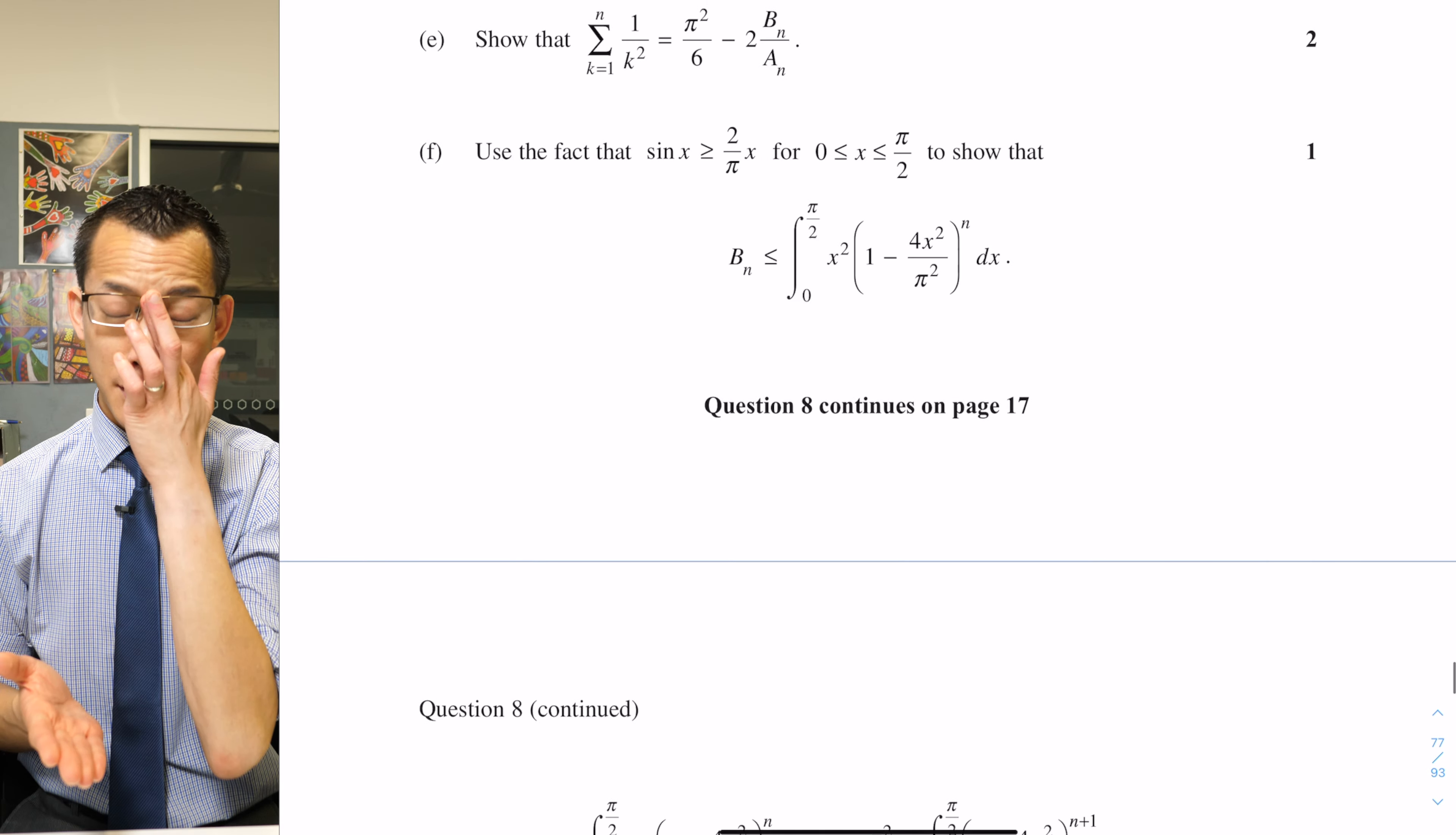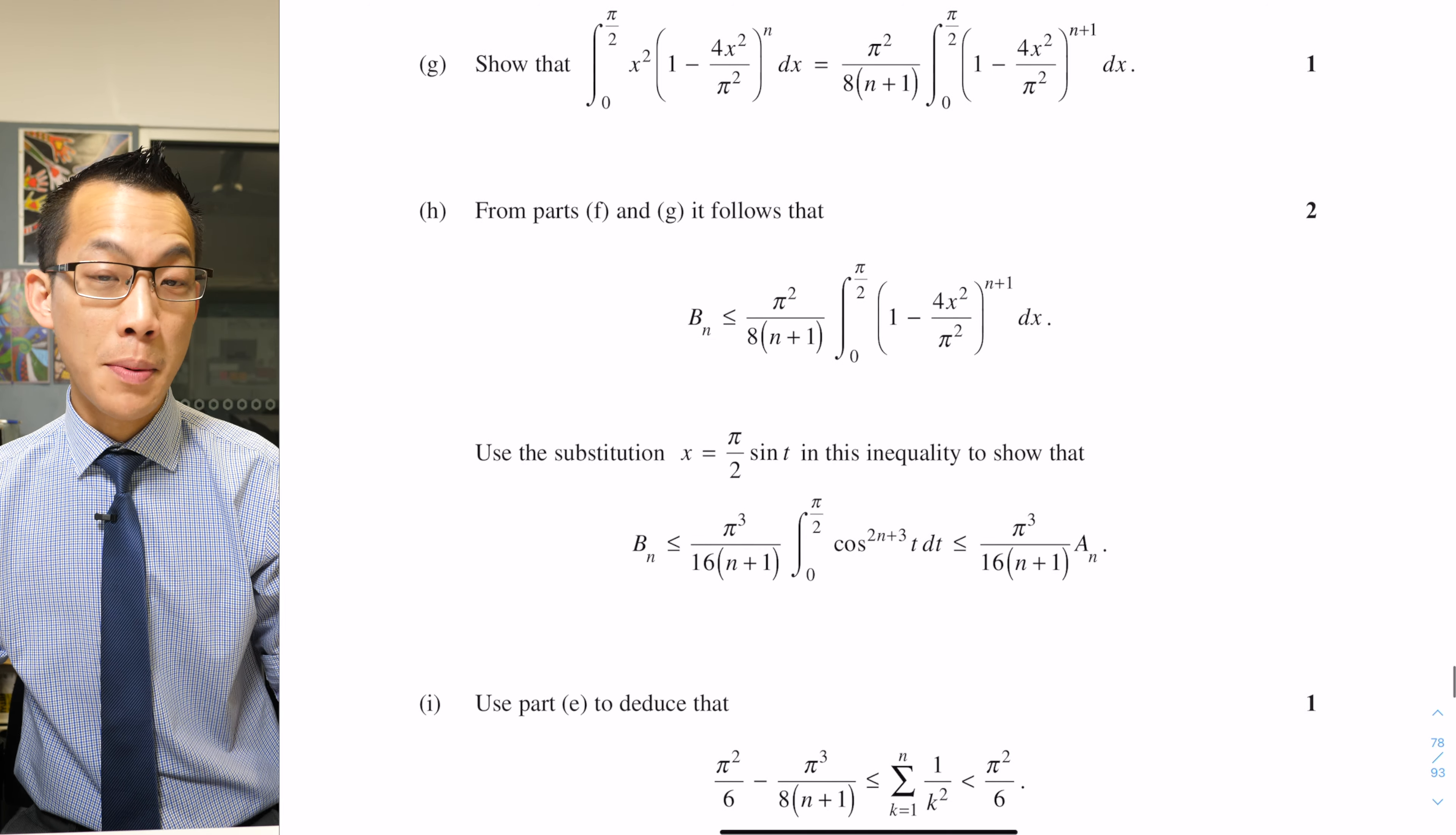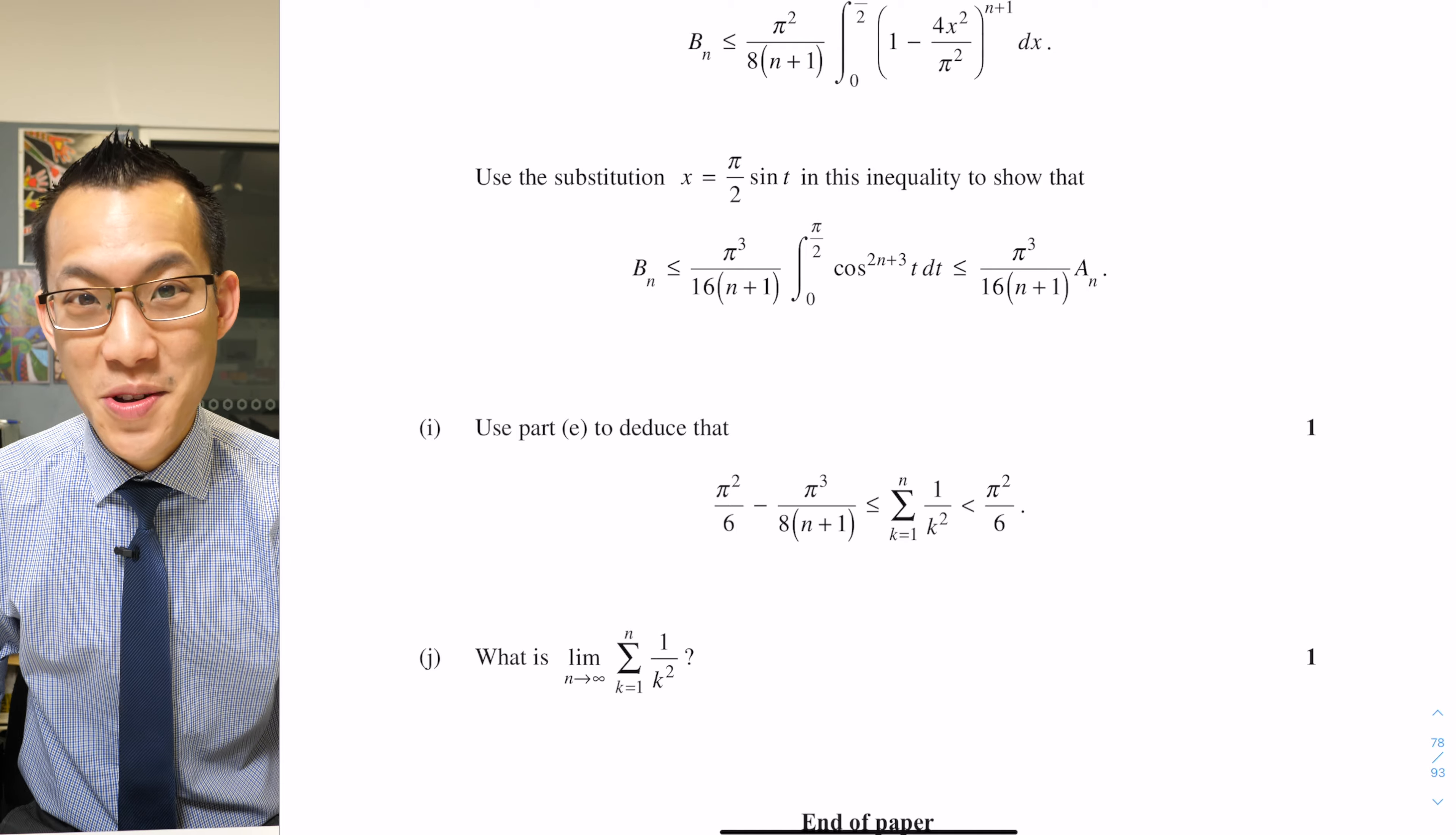You can see questions will often say 'hence or otherwise' or 'use part this or that.' And these questions, if you have a look at part H, it tells you which parts of the earlier questions you need to refer to—it says parts F and G. And then in part I it says look all the way back to part E. It doesn't expect you to hold all of that in your working memory.